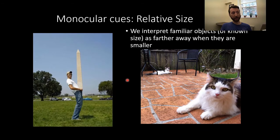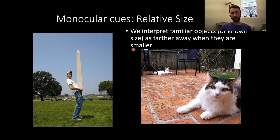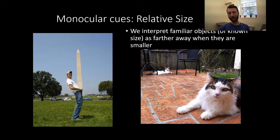We also have a number of visual cues that do not rely on binocular vision. Monocular cues rely on something that just one eye can see. Relative size is the first: we interpret familiar objects of known size as farther away when they appear smaller. Here we have two cats of similar size — we don't think one is a giant cat and one is tiny. We think one is a regular-sized cat close to us and one is a regular-sized cat far away, despite the difference in retinal image size. Thus we can infer the relative distance of the cats.